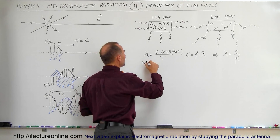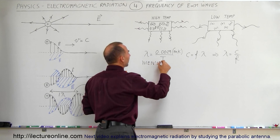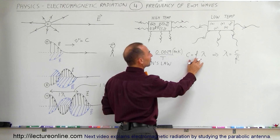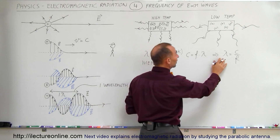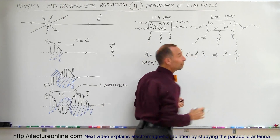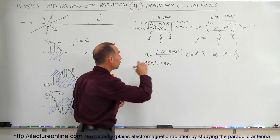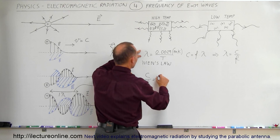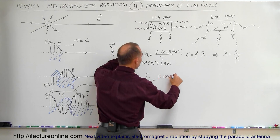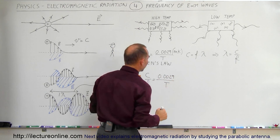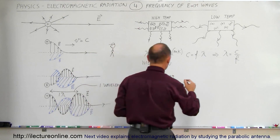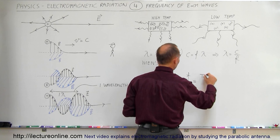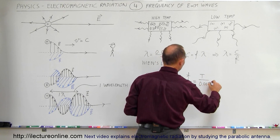Let me write it down. If we manipulate that equation a little bit more, notice that the speed of light is equal to the frequency times the wavelength, which means the wavelength equals the speed of light divided by the frequency. Substituting that into Wien's Law, we get the speed of light divided by the frequency is equal to 0.0029 divided by the temperature. Taking the inverse of the equation, we get the frequency divided by the speed of light is equal to the temperature divided by 0.0029.